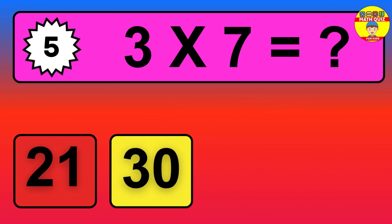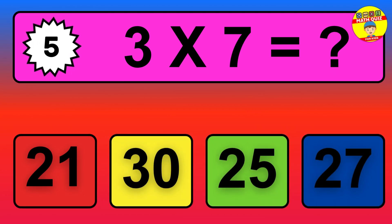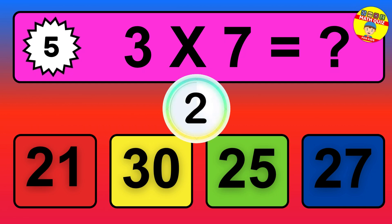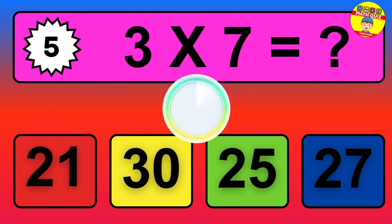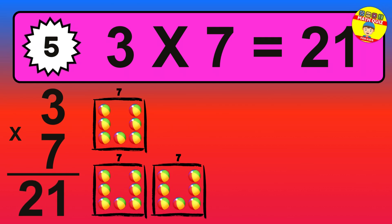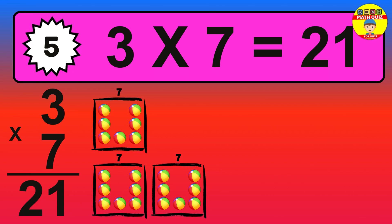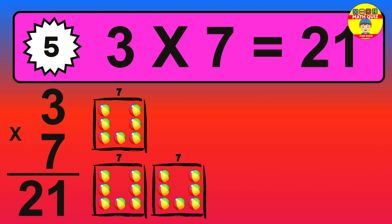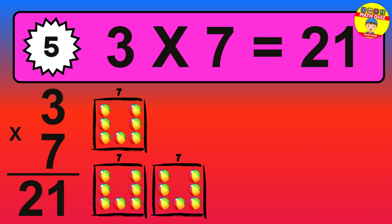Question five: three times seven equals what? To calculate, we have three groups with seven balls each one. So how many balls do we have? Twenty-one balls.